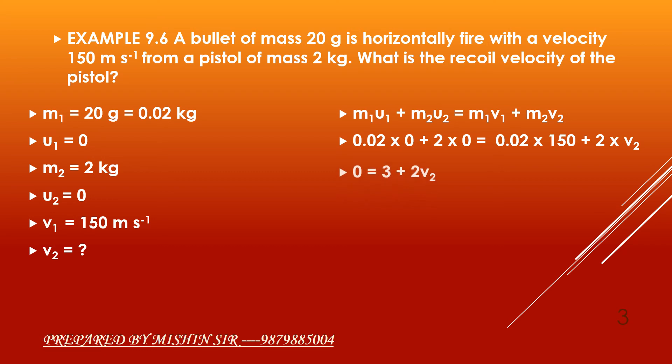We get 0 equal to 3 plus 2V2 by solving above step. So, 2V2 will be equal to minus 3. Solving it, V2 is equal to minus 3 upon 2. So, we get V2 equal to minus 1.5 meter per second.